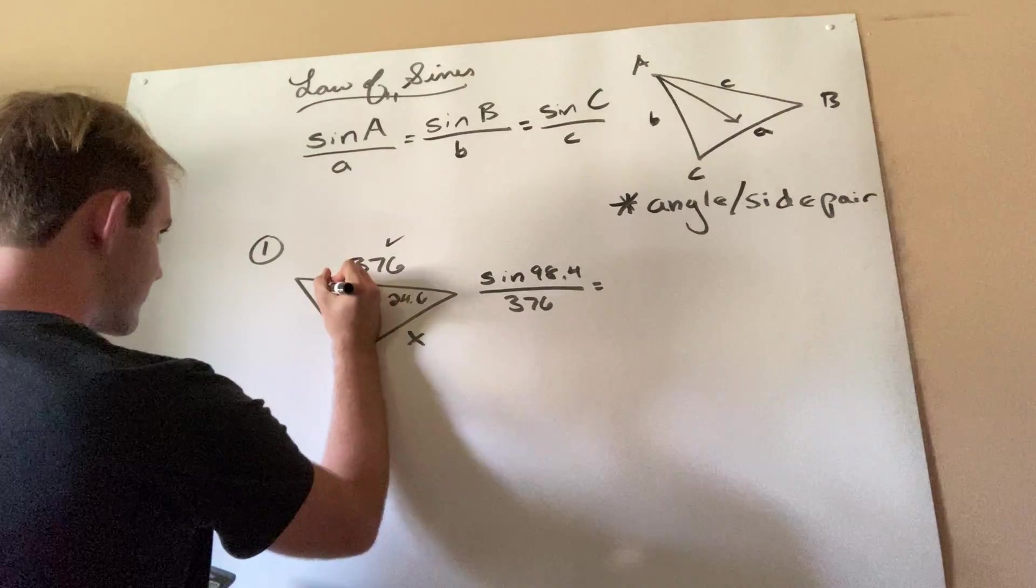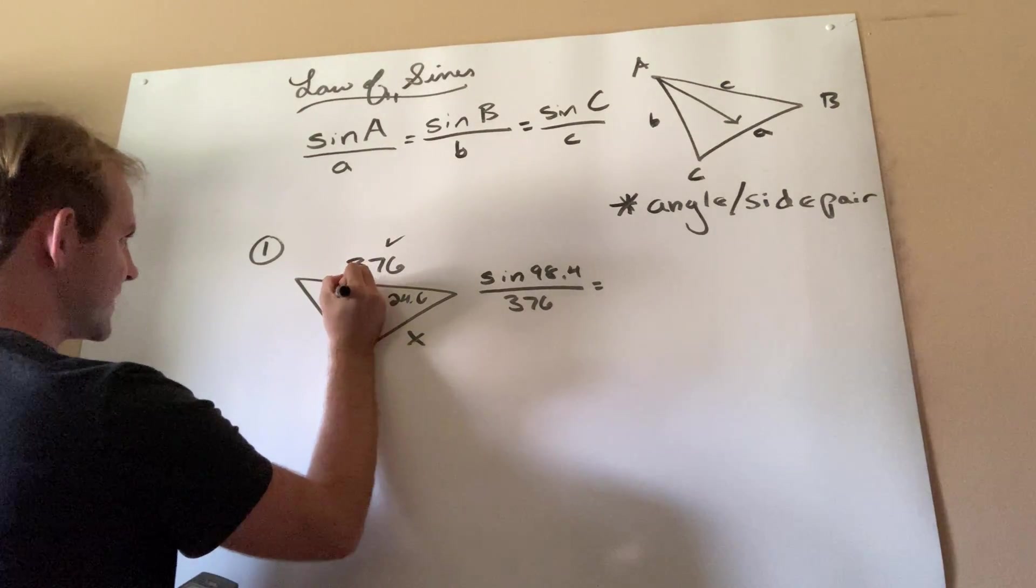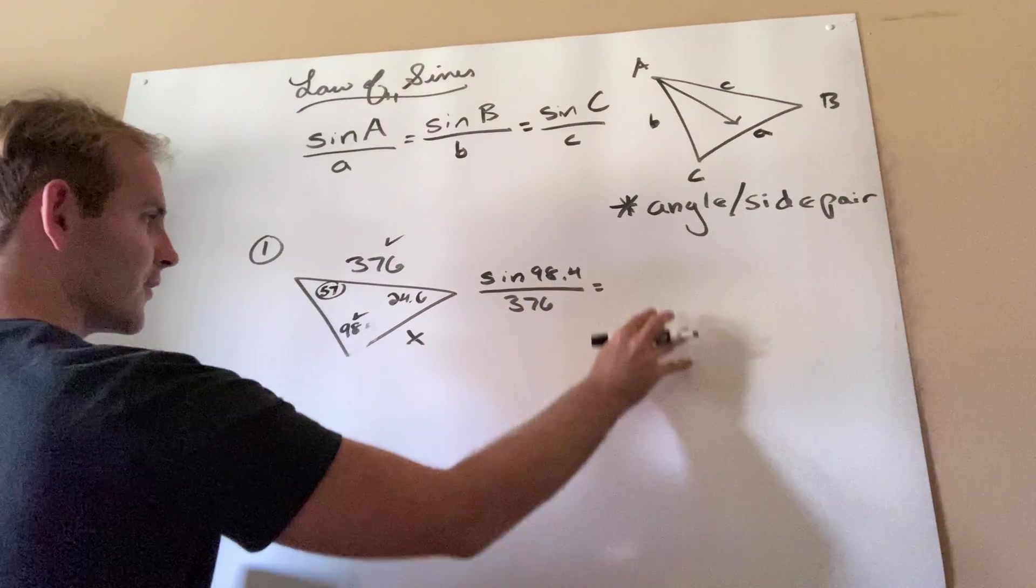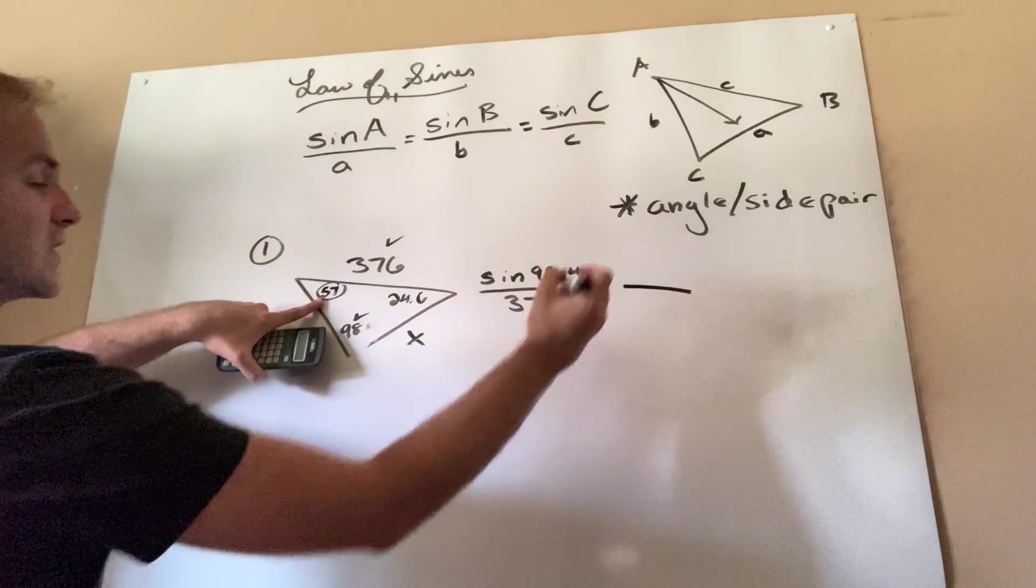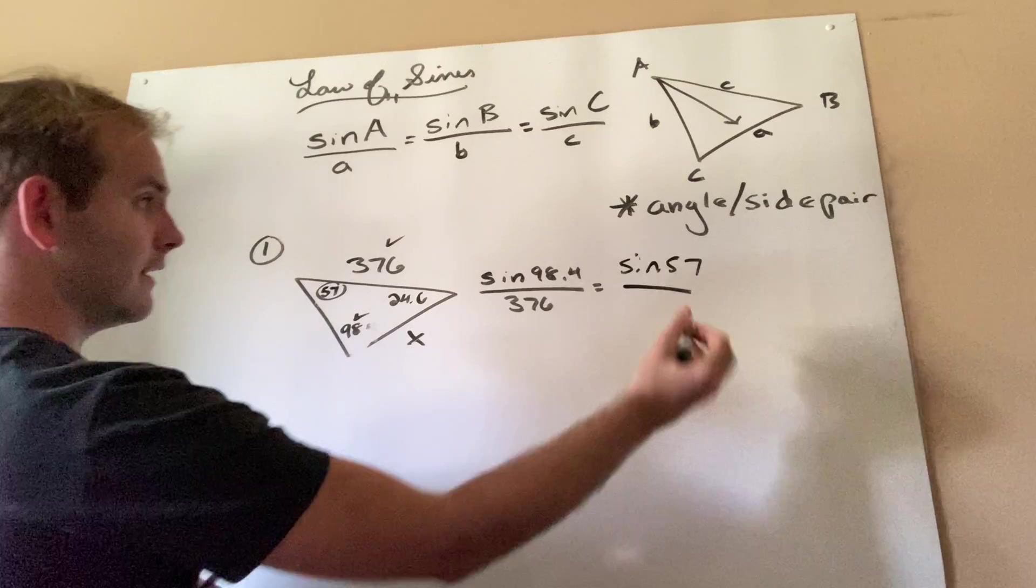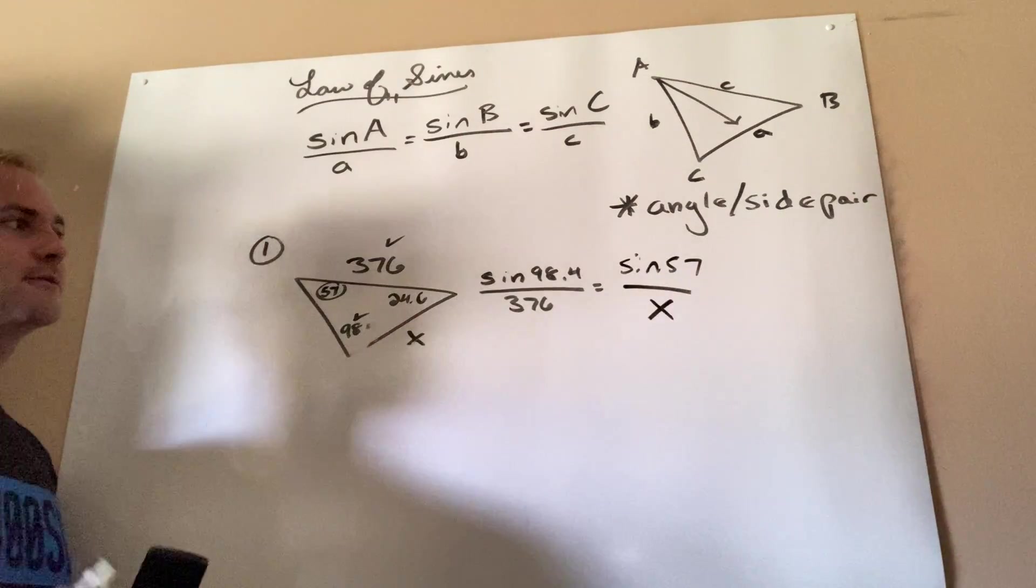So when I do that, I get this angle is actually 57 degrees. So now I can fill in the other fraction over here. So sine of 57 over the unknown side, which is X.